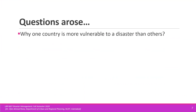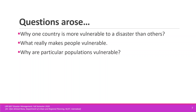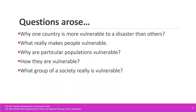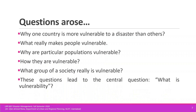This led to different questions: Why is one country more vulnerable to a particular disaster than others? What really makes people vulnerable? What are the characteristics and conditions which make people vulnerable? Why are these particular populations vulnerable, and how can we make them less vulnerable? Which groups of society are generally known, in disaster terminology, as vulnerable groups? And what group is really vulnerable?